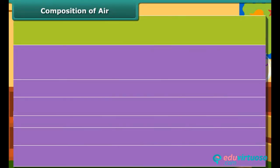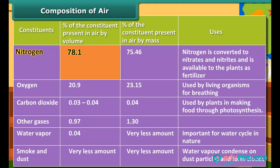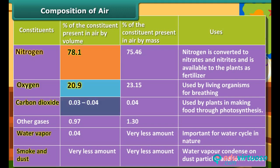What is air made up of? Air contains nitrogen, oxygen, carbon dioxide, and other rare gases. You can see from this table that nitrogen has the largest share, then oxygen, then some rare gases, and finally carbon dioxide has the least. Water vapor, smoke, and dust are present in very small amounts. Air is a mixture of different gases.